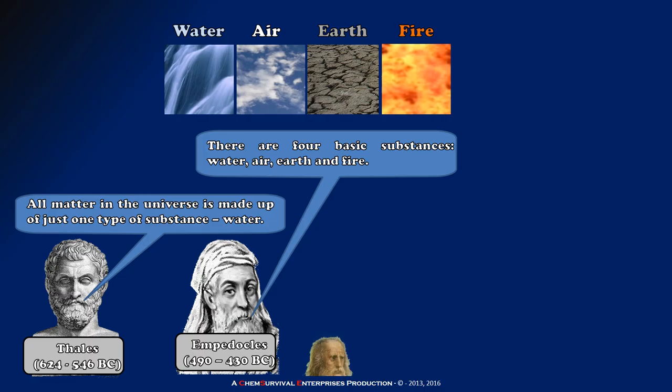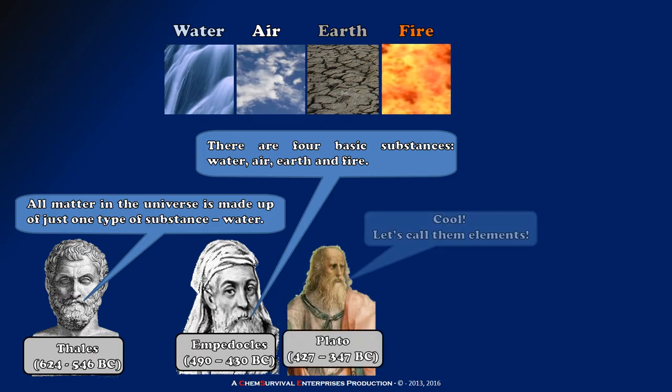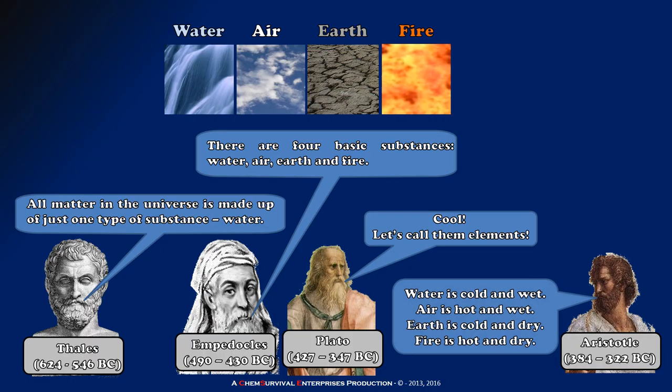In fact, it was Plato himself who first proposed that these fundamental substances be given the name elements. And Plato's most famous student, Aristotle, then attempted to make sense of these four elements and their properties by describing what he thought were a specific set of properties unique to each one.